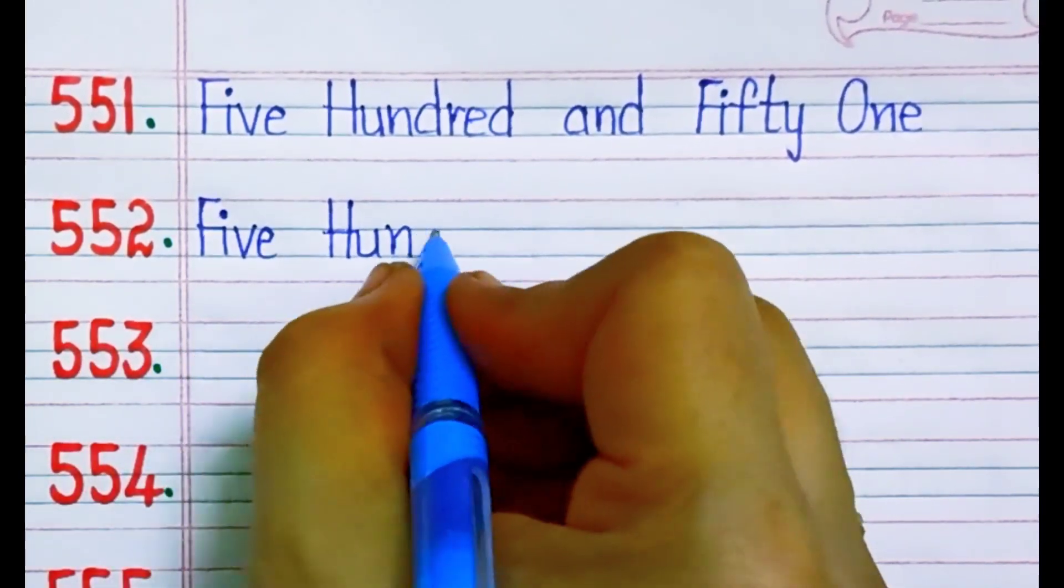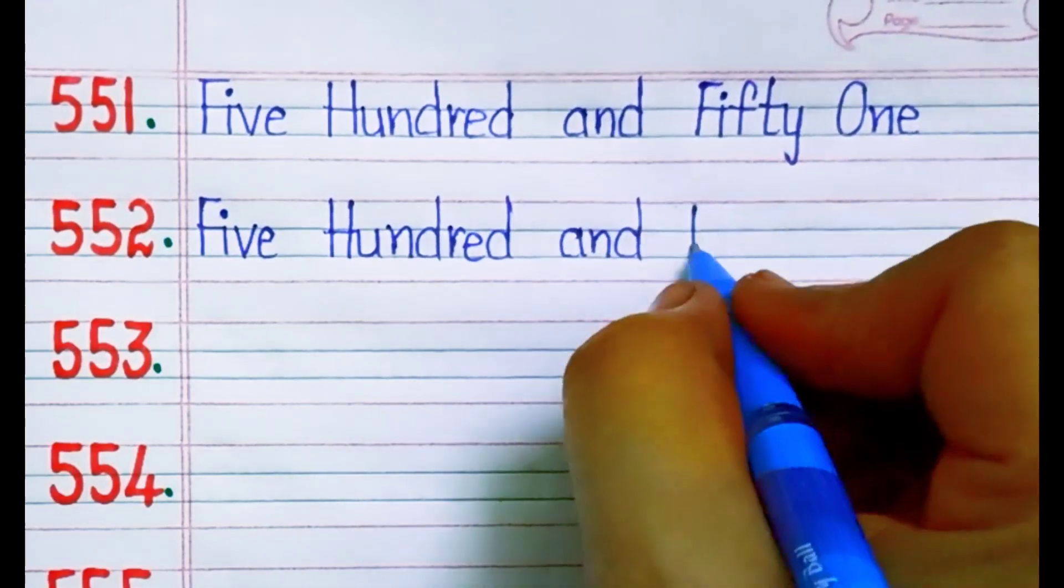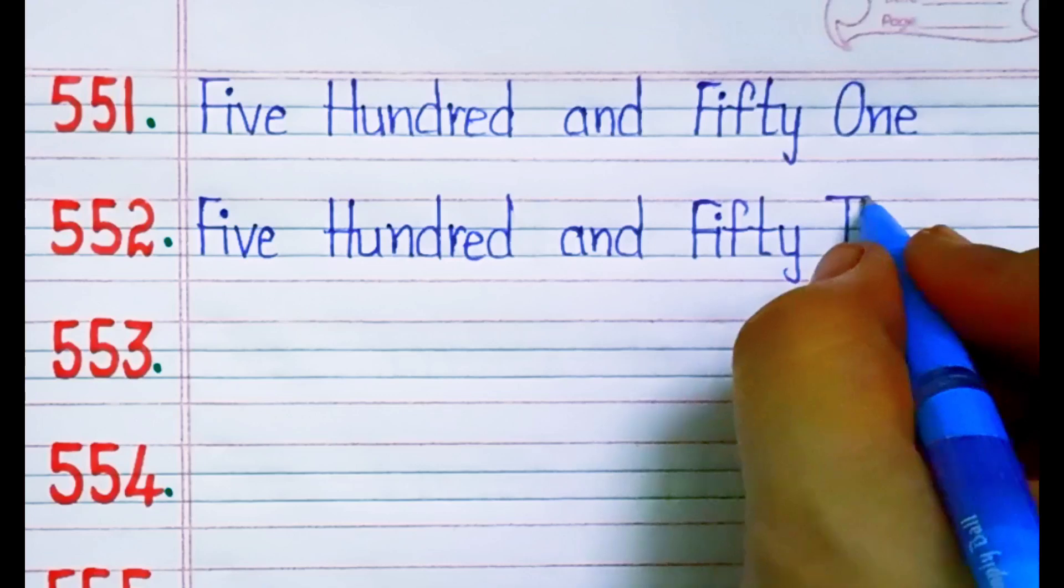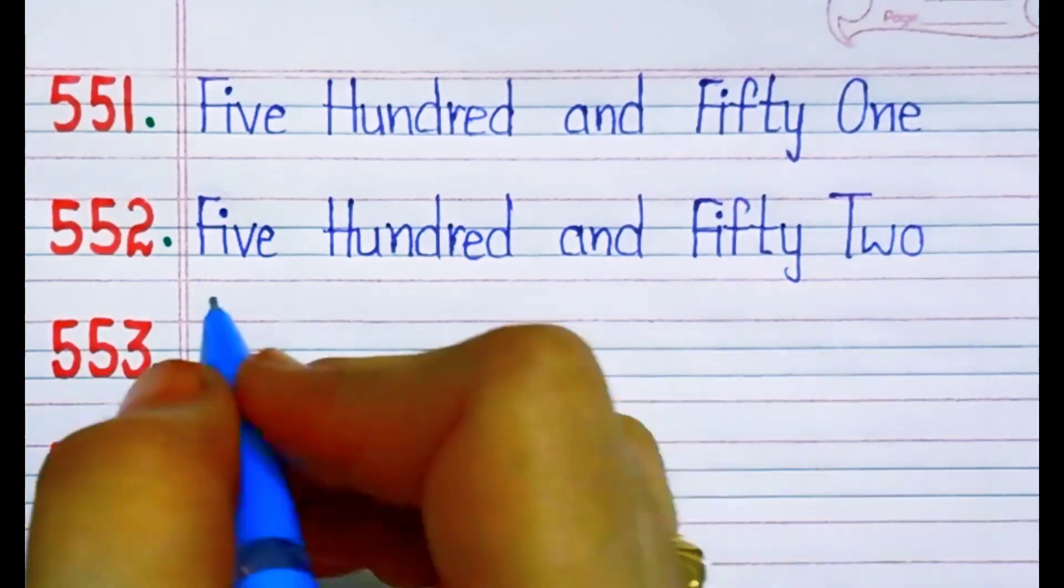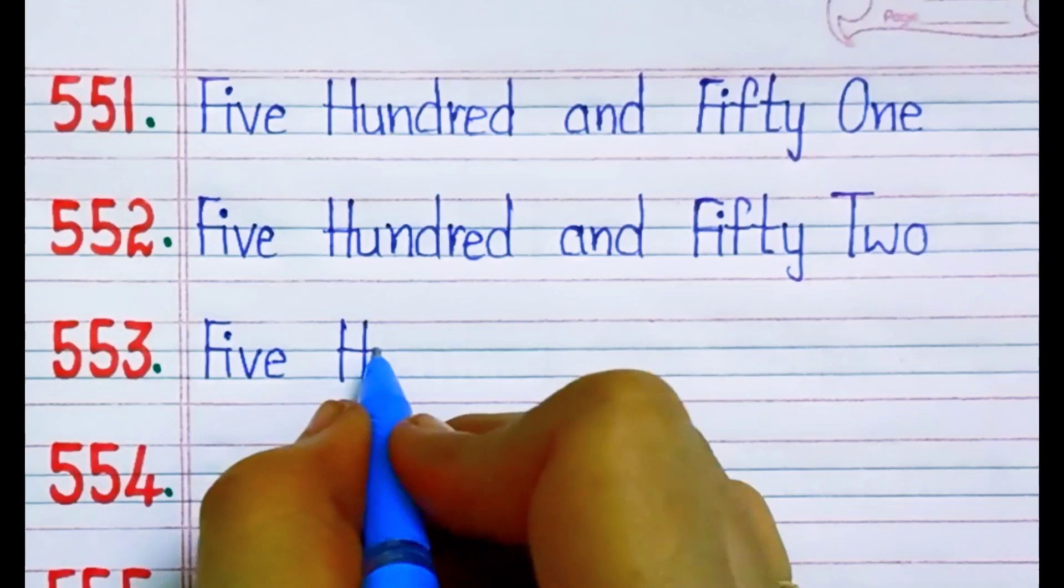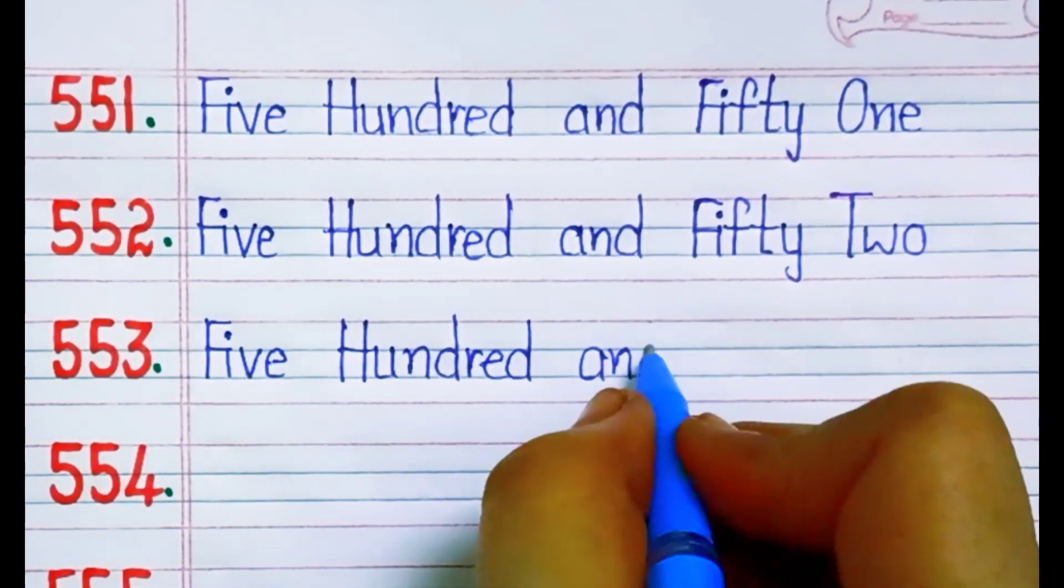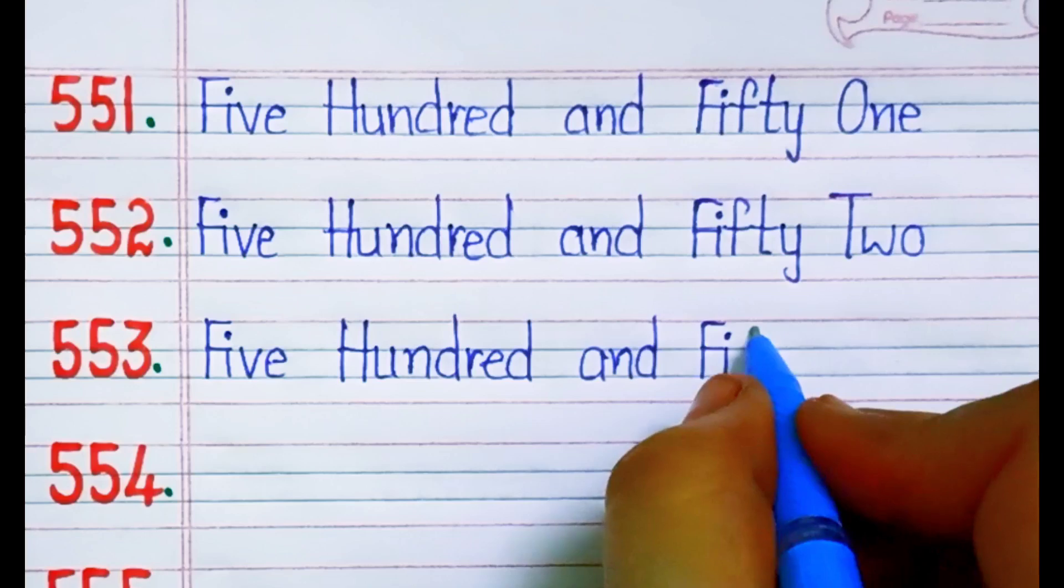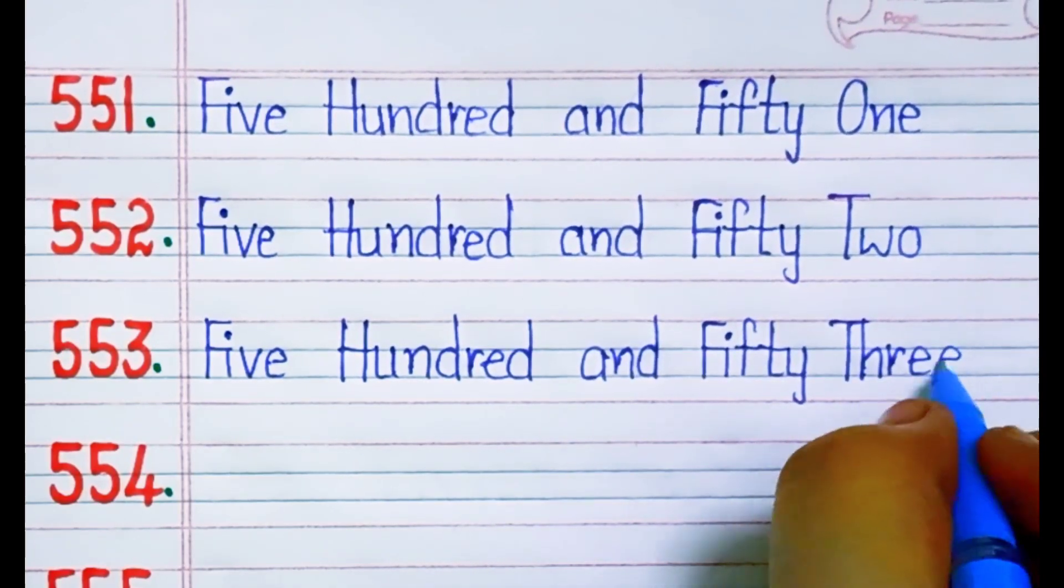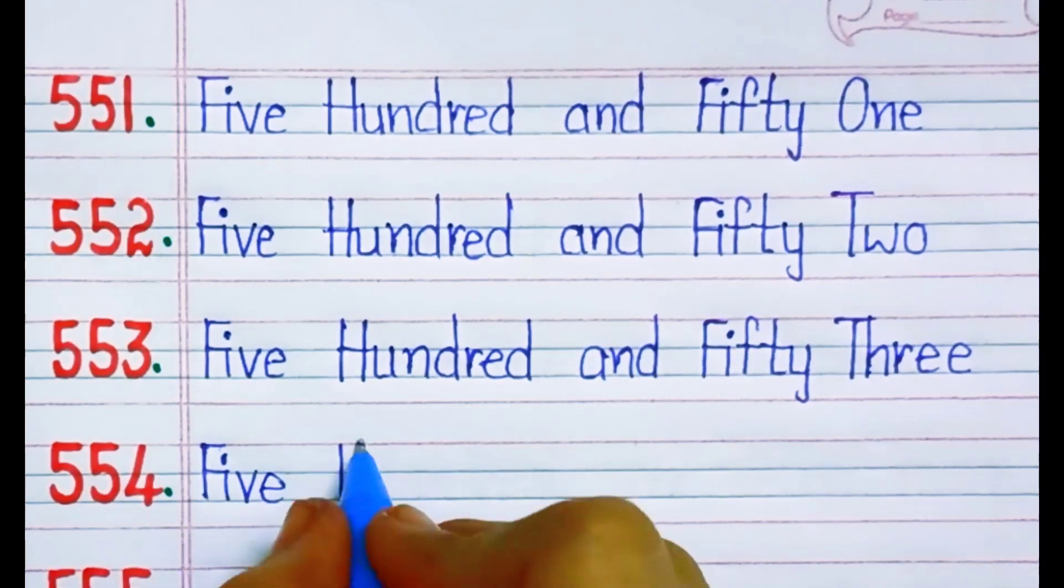F I F T Y fifty, T W O two, fifty two. Five five three, five hundred and fifty three. F I F T Y fifty, T H R E E three, fifty three. Five five four, five hundred and fifty four.